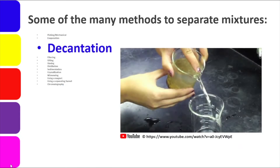Next is decantation — this is the method of pouring out one part of the mixture. It involves a liquid being poured off, and can be done on a solid-and-liquid mixture or on a liquid-to-liquid immiscible mixture, like oil and water.